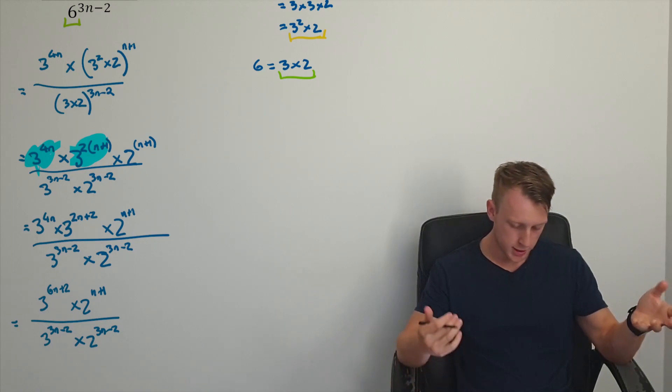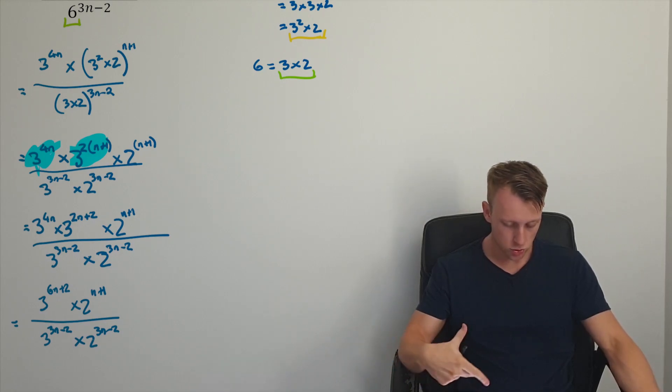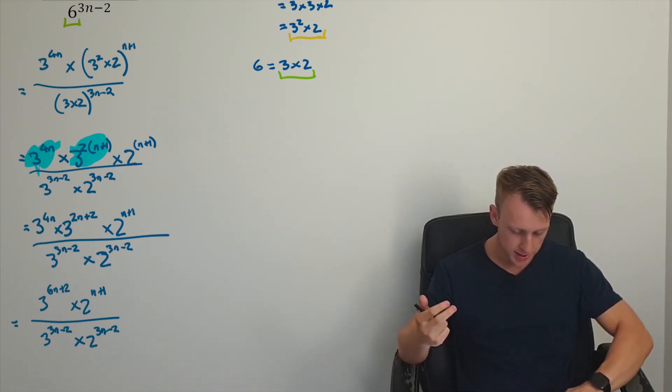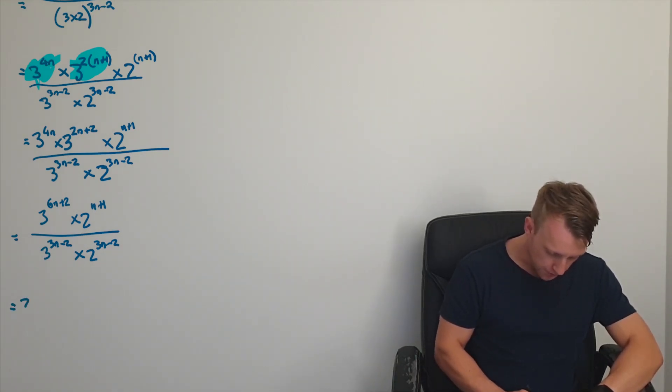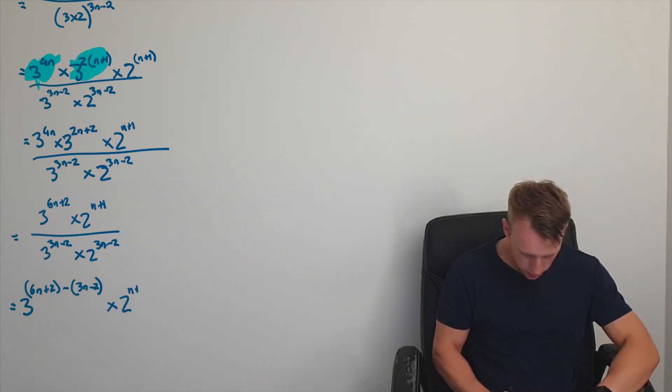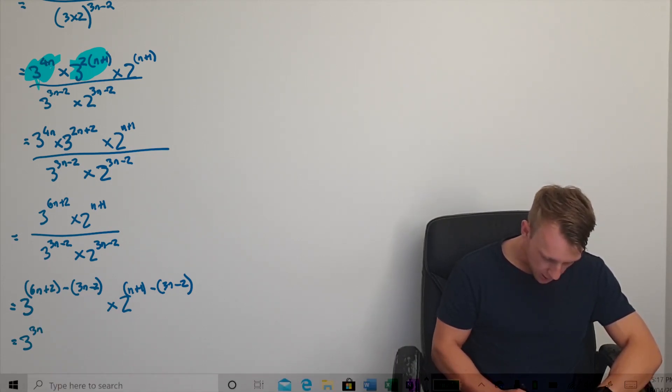And now here I've got numerator, denominator, I can just use the second index law to simplify this here. So I'm going to take the terms with the base of 3, and I'm going to subtract the power. And then, with the number 2, I'm going to subtract that power.